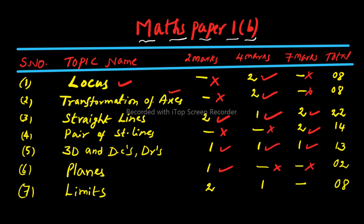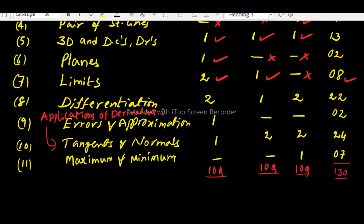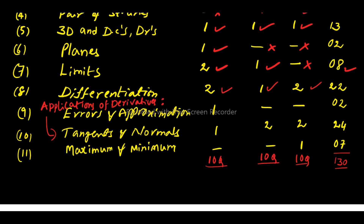Now moving to Calculus. The Limits topic gives 2 two-mark questions and 1 four-mark question. Then Differentiation: 2 two-mark questions, 1 four-mark question, and 2 seven-mark questions, totalling 22 marks weightage.